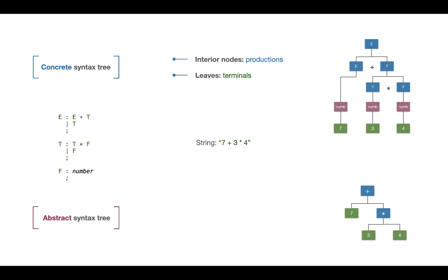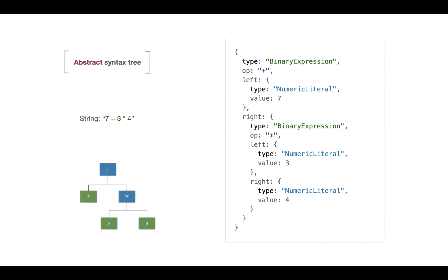In abstract syntax trees, the interior nodes represent the operators — something high-level already representing language-level constructs — and the leaves represent the operands of those operators. When we think about how to encode an AST, the simplest structure we'll use is just a JSON structure. Every node in the AST will have a type. For example, the plus operator represents a binary expression with a left-hand side and right-hand side, where the right-hand side here is also a binary expression but with the times operator, which also has left and right-hand sides.